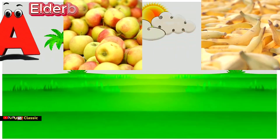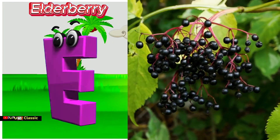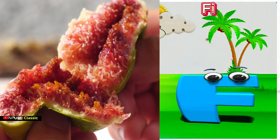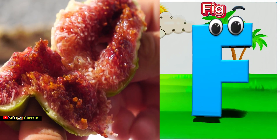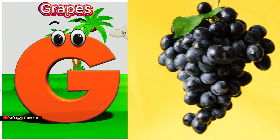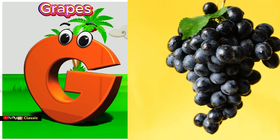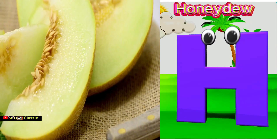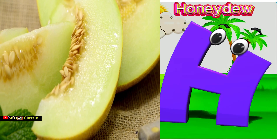E is for elderberry, e-e-elderberry. F is for fig, f-f-fig. G is for grapes, g-g-grapes. H is for honeydew, ha-ha-honeydew.